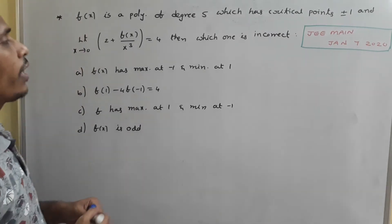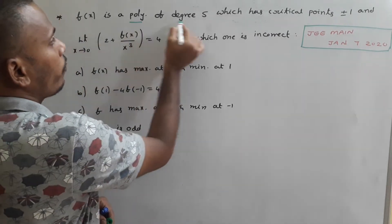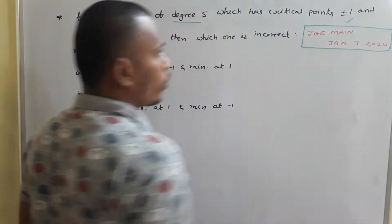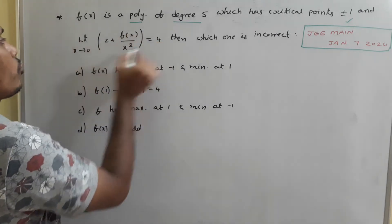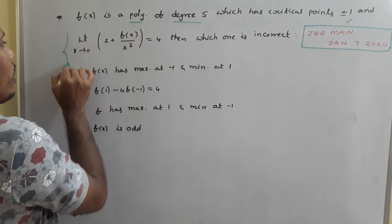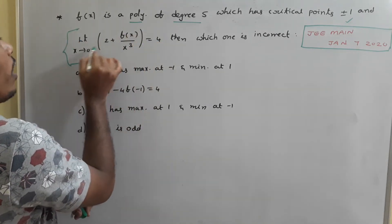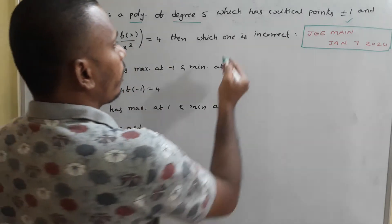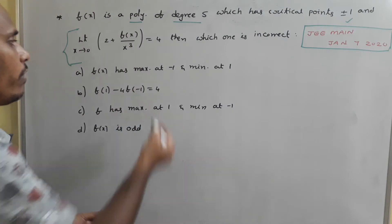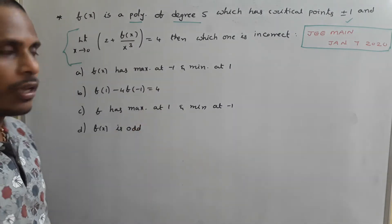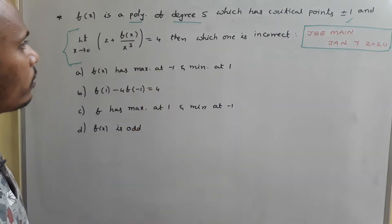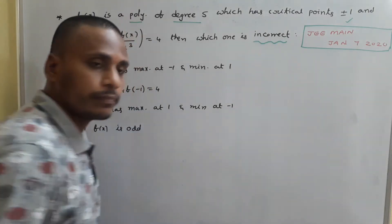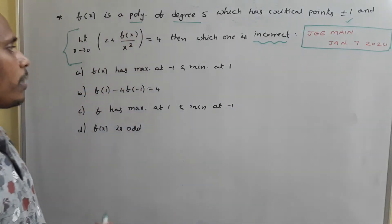What is given in the problem: f(x) is a polynomial of degree 5 which has critical points ±1, and the limit as x tends to 0 of [2 + f(x)/x³] equals 4. We need to find out which one among the given options is incorrect.